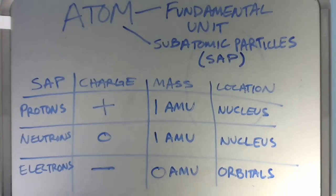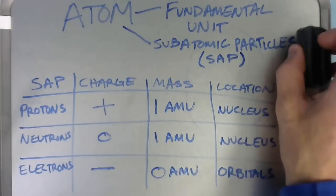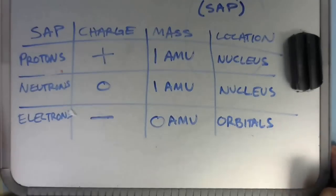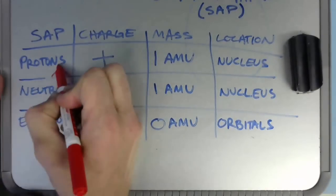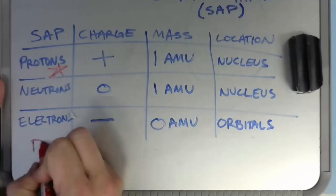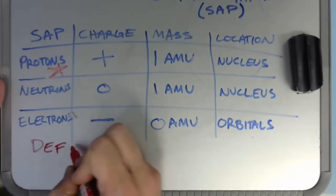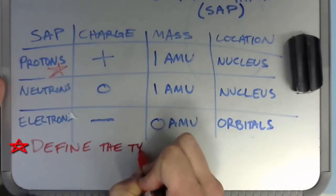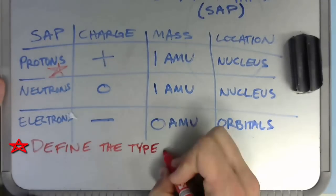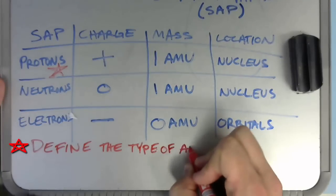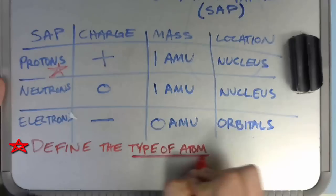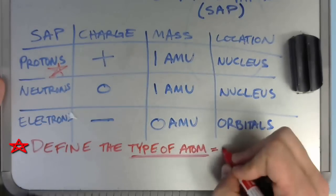Now the number of protons, neutrons, and electrons an atom has will give it different properties.